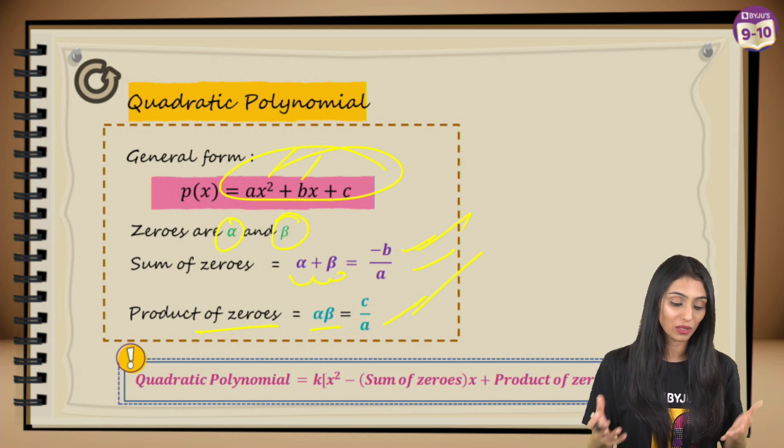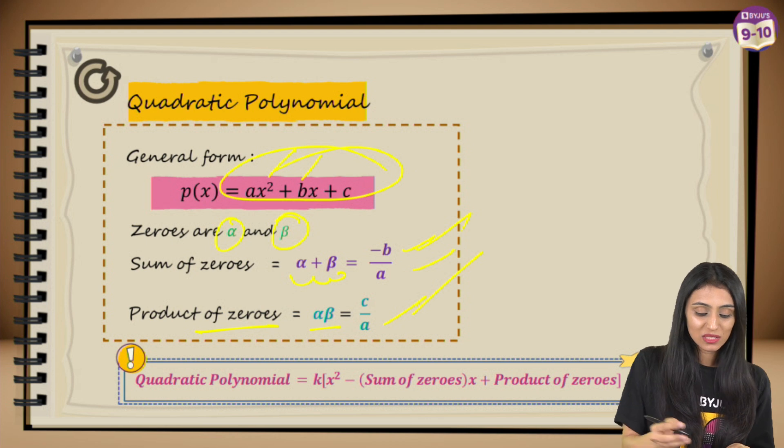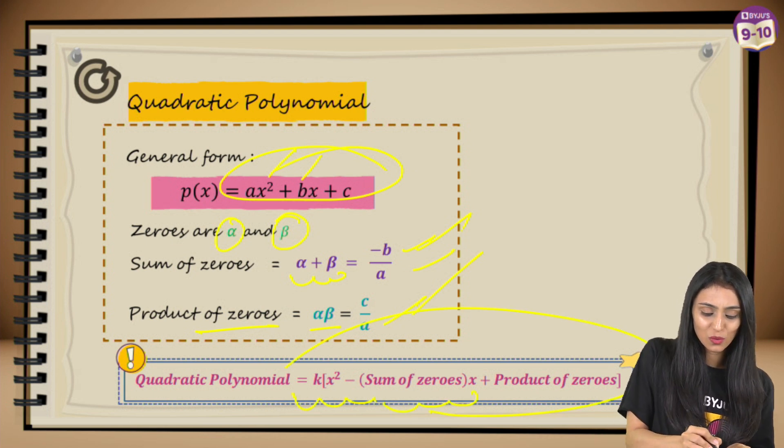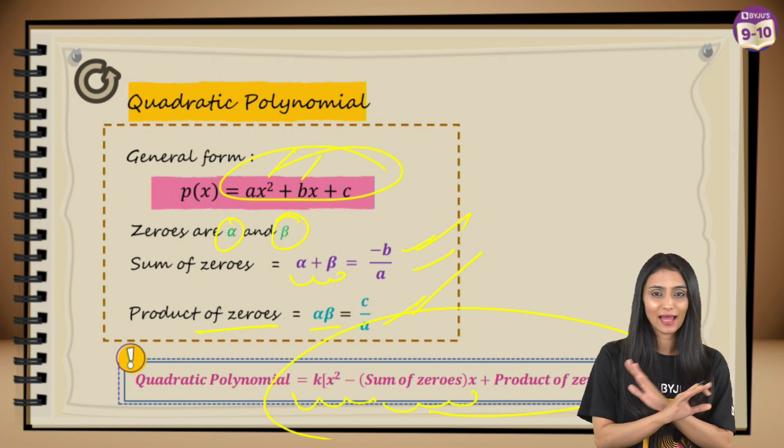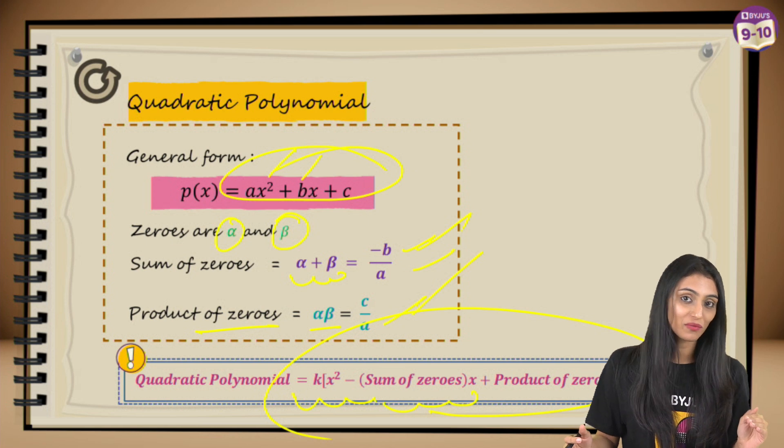And let's suppose we are given the zeros of the polynomial and we have to frame a quadratic polynomial. In that scenario we simply use the formula: k times [x² - (sum of zeros)×x + product of zeros]. Substitute the values and you will get the answer. Now I hope that whatever I discussed today is crystal clear in your mind, but in case you have any doubts, please post your doubts in the comment section below.